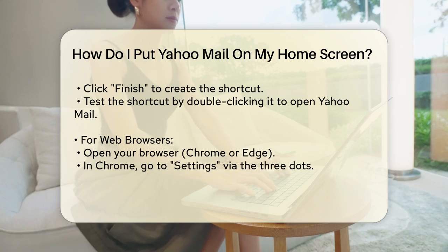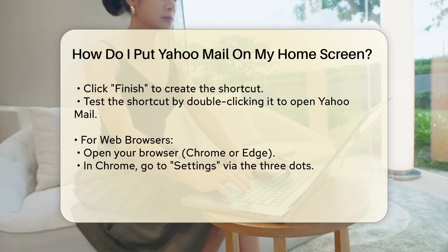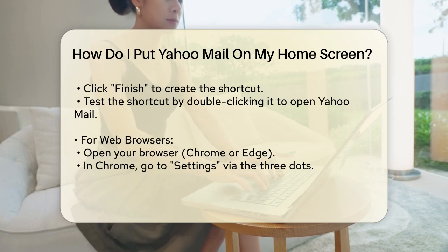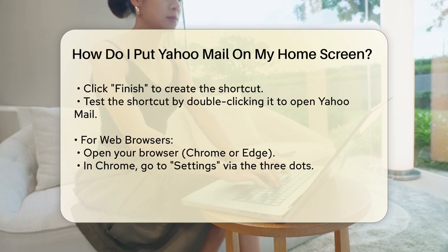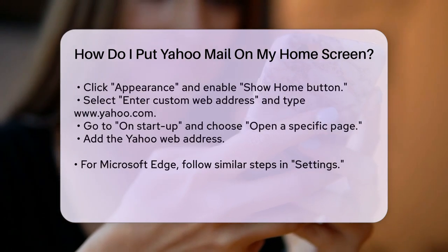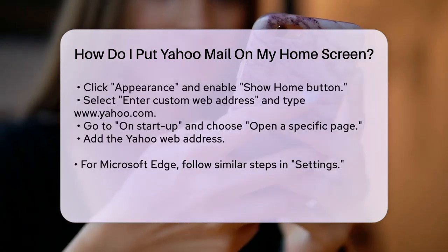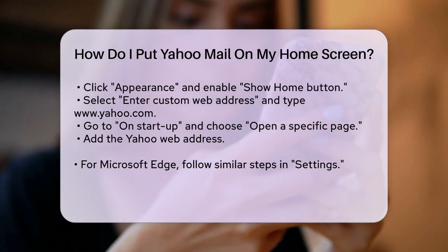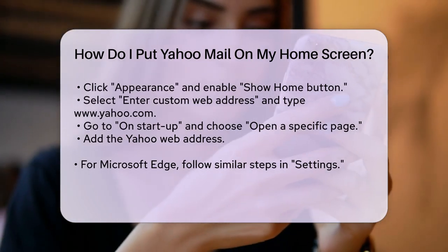On your web browser, if you prefer to have Yahoo Mail as your home page, here's how you can do it. Open your web browser, such as Google Chrome or Microsoft Edge. For Chrome, click on the three vertical dots at the top right and select Settings. On the left-hand side, click on the Appearance menu. Under the Appearance section, click on Show Home button — this will turn blue and you'll see new options below. Select the radio button for 'Enter custom web address' and type www.yahoo.com.